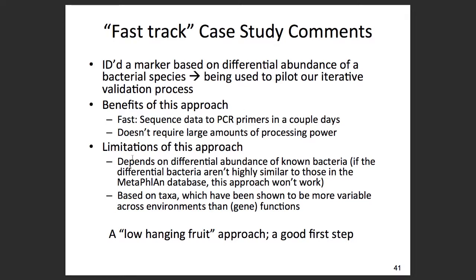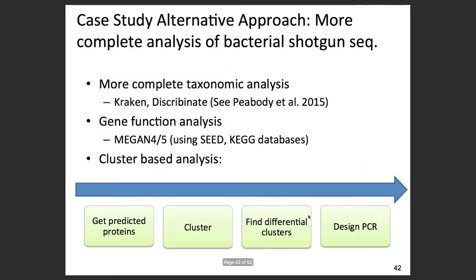The limitations of this approach: it really depends on the differential abundance of known bacteria similar to those in the MetaPhlAn database. If you have interesting markers that aren't in MetaPhlAn — particularly for environmental samples outside the gut microbial realm — this approach won't work. It is also based on taxa, which have been shown to be more variable across environments than gene functions. This is a low-hanging-fruit approach.